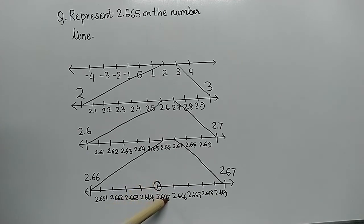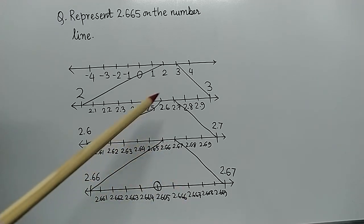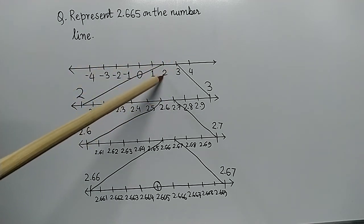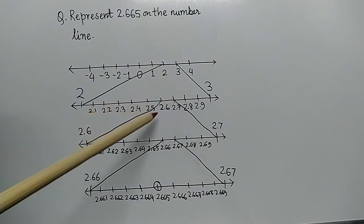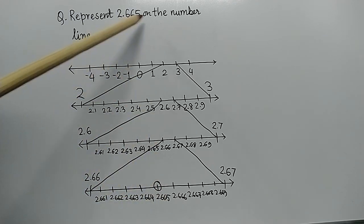As soon as we get our number, the magnification process stops. This process of visualizing the representation of numbers on the number line through magnification is called the process of successive magnification — successive because we magnified successively: first between 2 and 3, then between 2.6 and 2.7, then between 2.66 and 2.67, and thereafter we got our number.